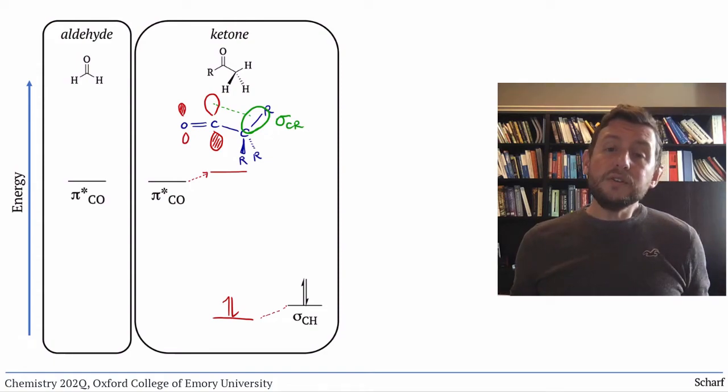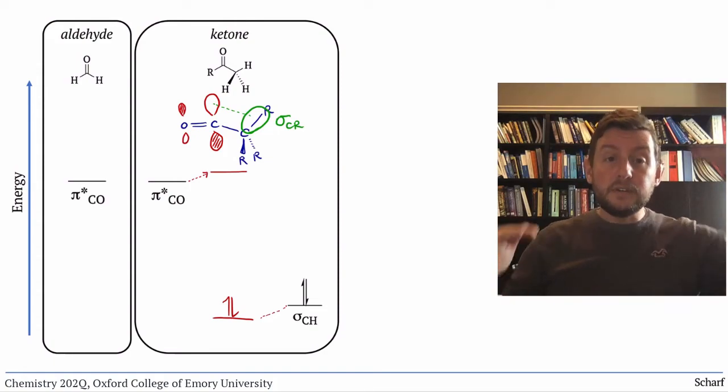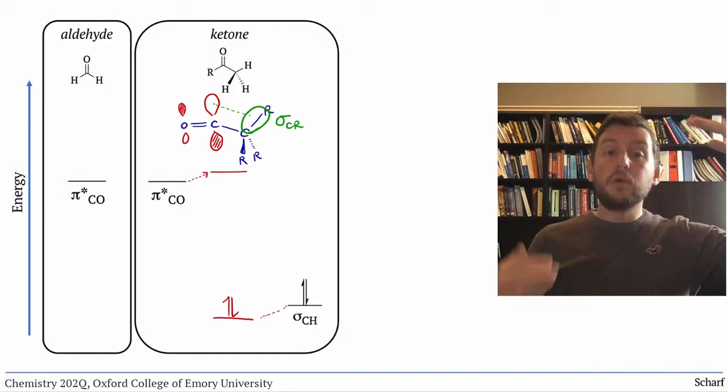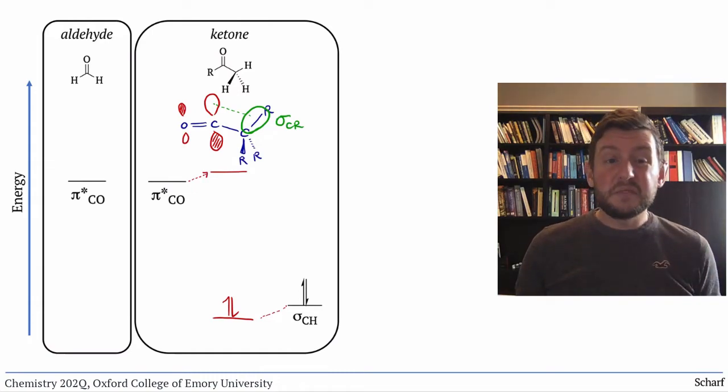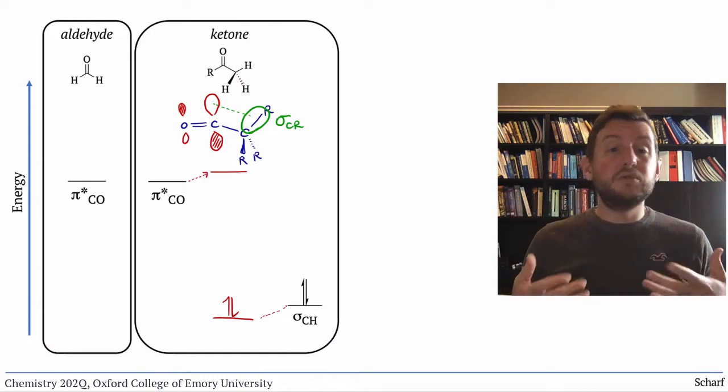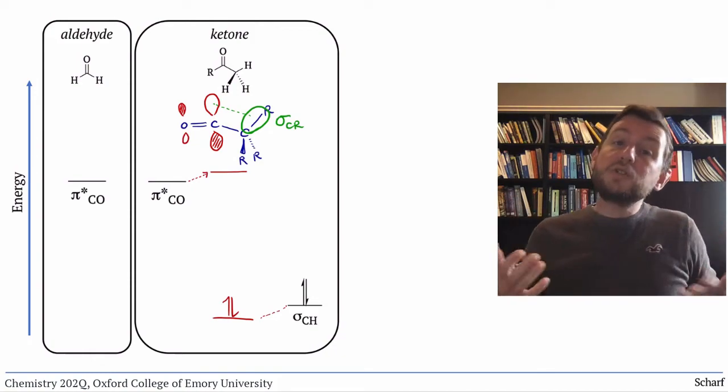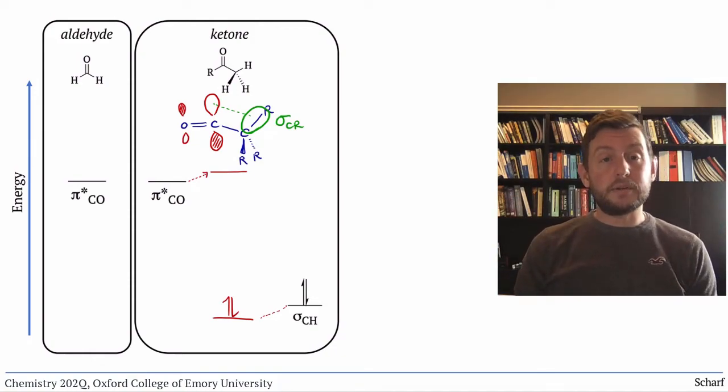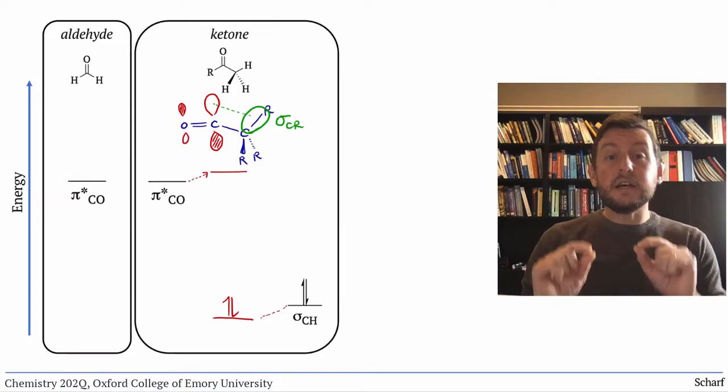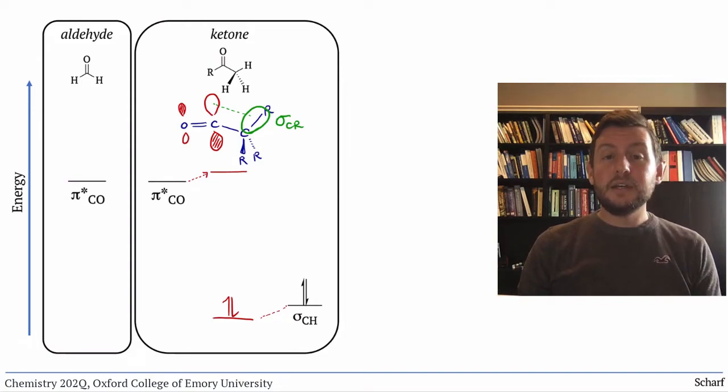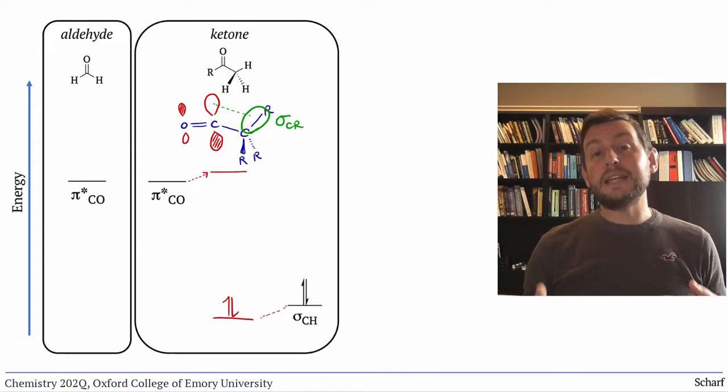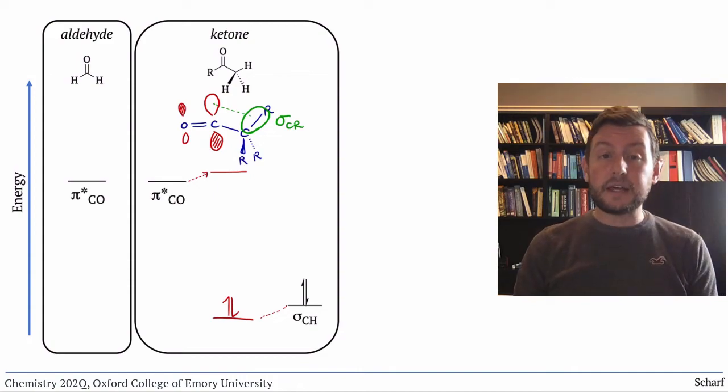Since the original CO pi star orbital and the filled sigma bonding orbital were very far apart in energy, this effect is pretty minimal. We're not really making any true new bonds, we're just tweaking the energies of the existing orbitals. But there is a small effect. The CO pi star orbital of a ketone is slightly higher in energy than the CO pi star orbital of an aldehyde. So ketones are slightly less electrophilic than aldehydes.